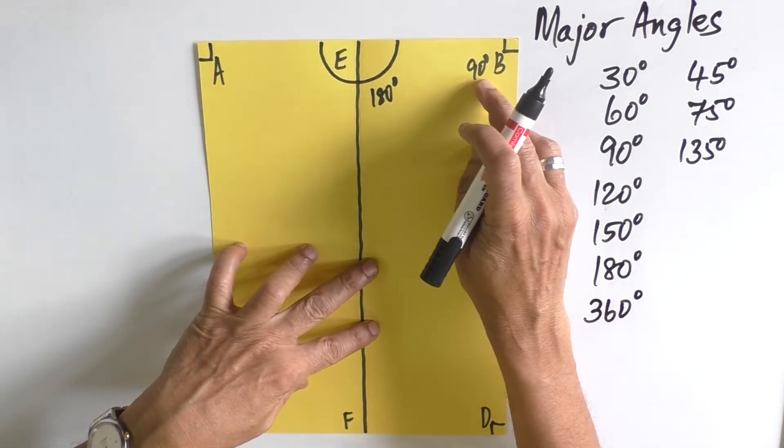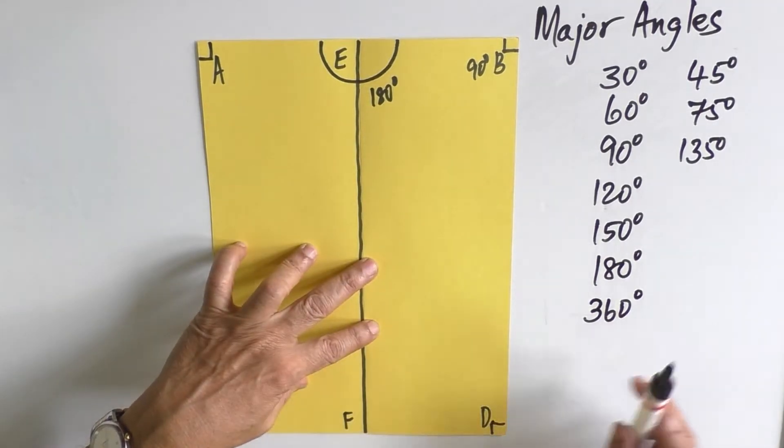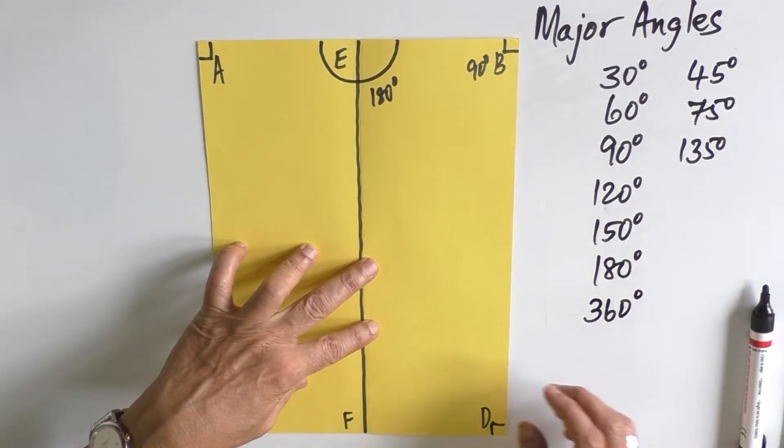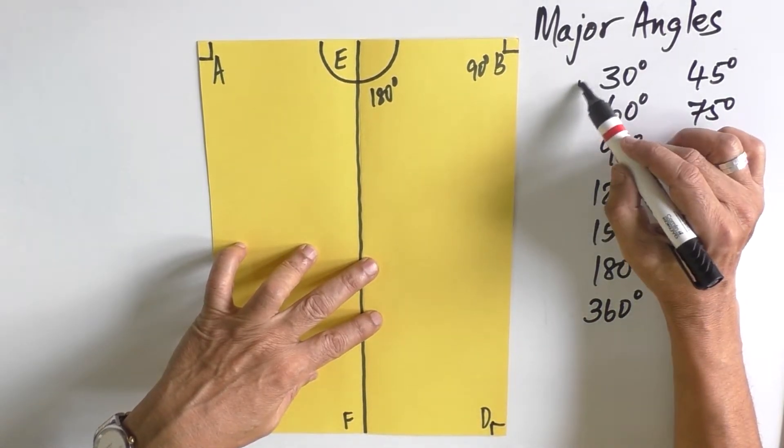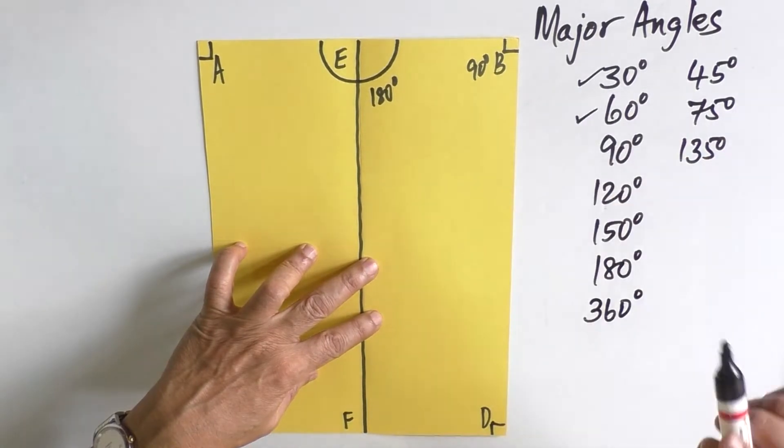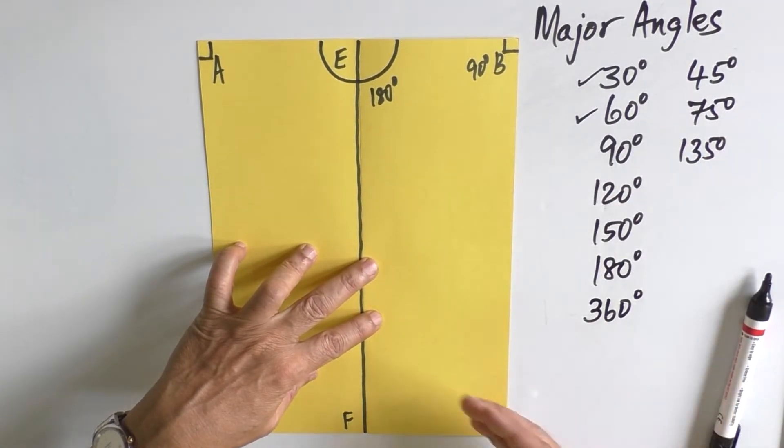So we know 90 degrees and 180 degrees. Now, let us see how the major angles can be formed by paper folding. I would like to get 30 degrees and 60 degrees. One method is